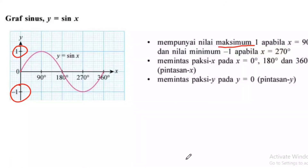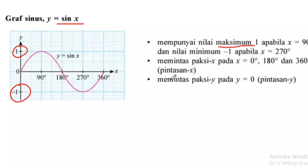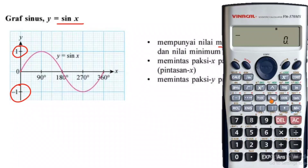Biasanya Cikgu akan minta pelajar tekan calculator untuk kenal pasti graf. Kalau graf sin, pelajar tekan sin 0, nilai dia mesti kosong. Kalau pelajar tekan sin 90, nilai dia mesti 1. Senang je — kita tekan calculator untuk kenal pasti sama ada ini graf sin.